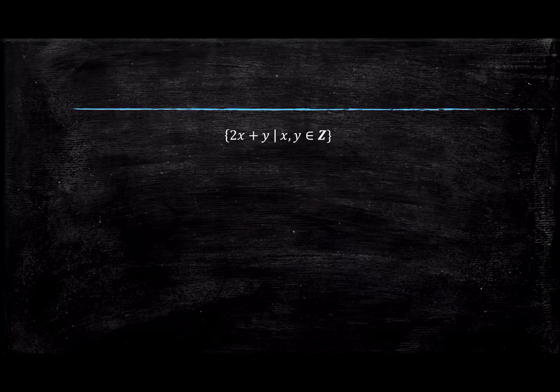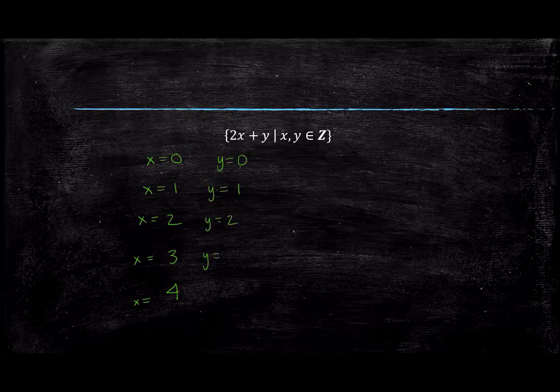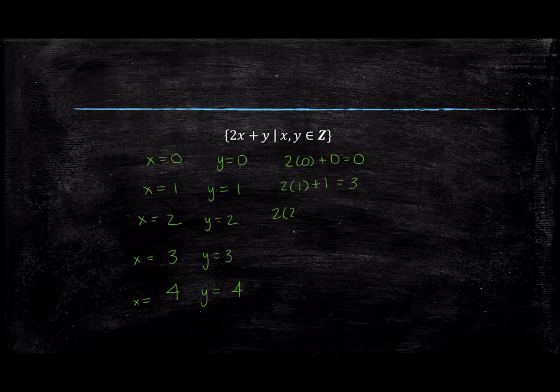This is a set of all values 2x plus y such that x and y are integers. Again, it's too many values to list, so we must use just five values at random to describe some elements. We'll use x equals 0, 1, 2, 3, 4, and y equals 0, 1, 2, 3, and 4. This gives us that the elements 0, 3, 6, 9, and 12 are elements in our set.